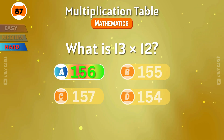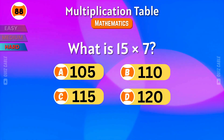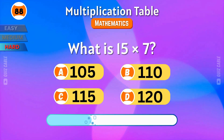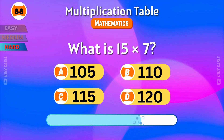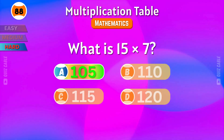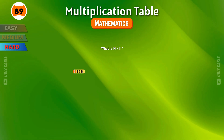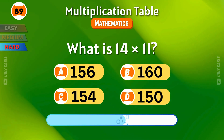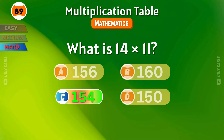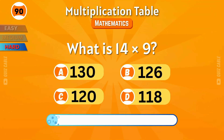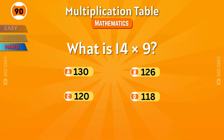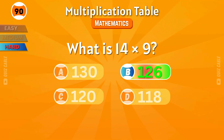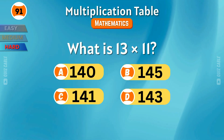What is 15 times 7? Yes — 105. What is 14 times 11? That makes 154. What is 14 times 9? The result is 126. What is 13 times 11? That's 143.